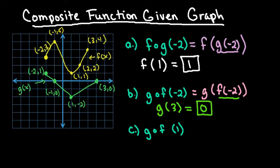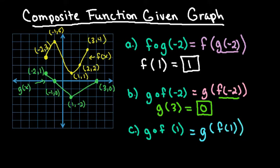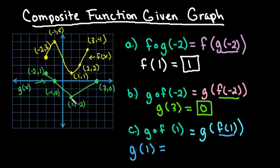One more — let's look at the last one. This one says find g of f of 1. What this is telling us to do is go to my f equation and look for an input of 1, where my x-coordinate is 1. If I go to my f equation where my input is 1, my output is also 1. So this is telling us that we're going to find g of 1. If I go to my graph and find g where my x-coordinate is 1, my output is negative 2.